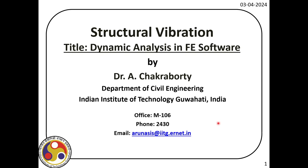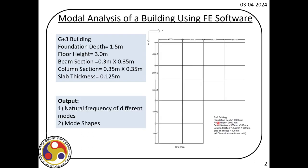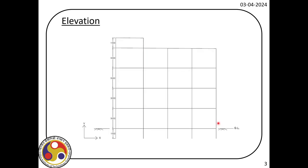If you quickly recall, this is the layout of the structure that we modeled. It is a G plus 3 building and the floor height is 3 meters. I am not going into the details of that because we have already modeled it and then did the time history analysis. This is the elevation of the building.